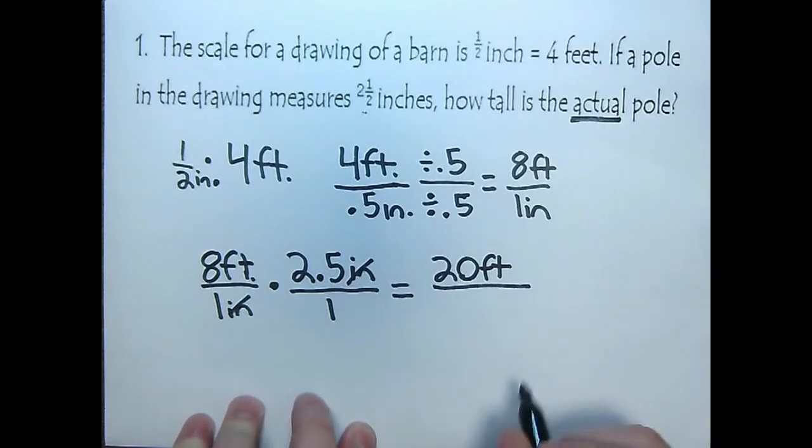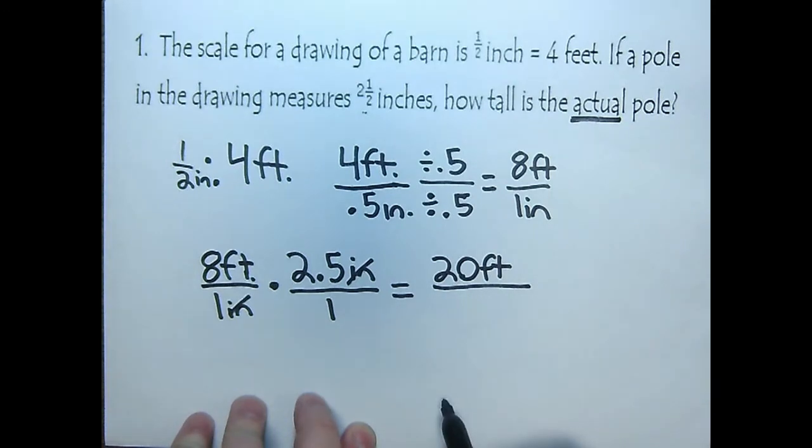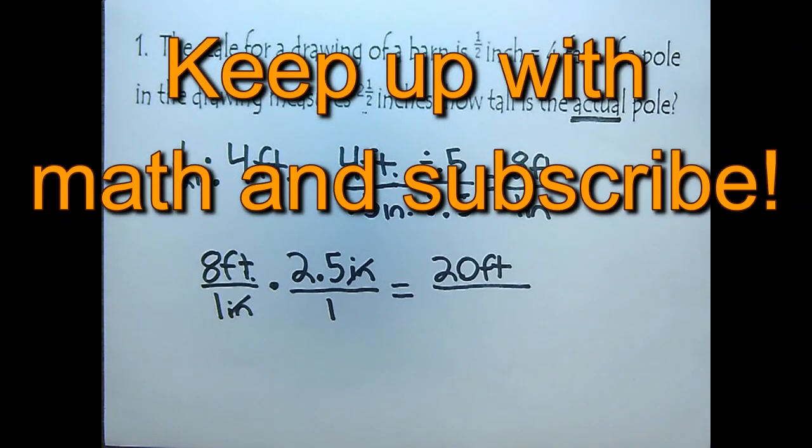So now we can answer the question, how tall is the actual pole? The actual pole is 20 feet. All right, I hope this video helps. In the upcoming videos, we'll do a couple scales with dimensions, and so you can see how it works with more than one side.